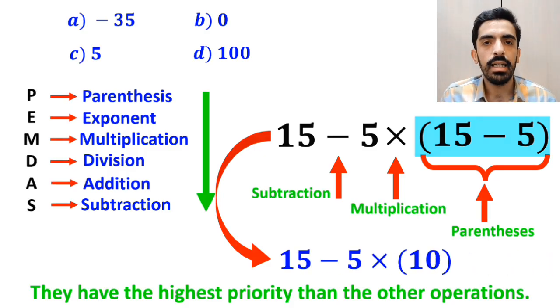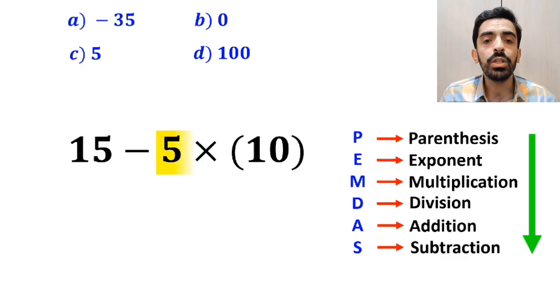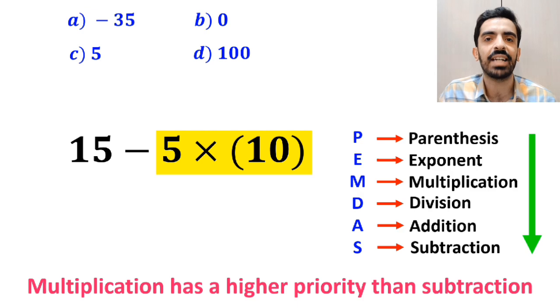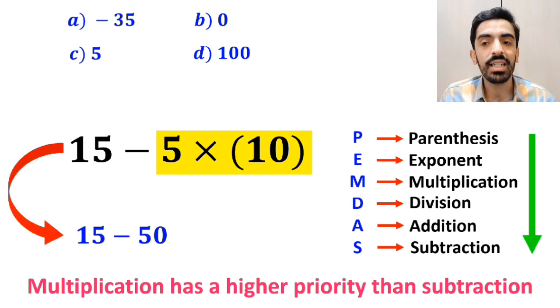In the next step we move on to the multiplication between 5 and 10 because multiplication has a higher priority than subtraction. So we'll write this expression as 15 minus 50 which finally gives us the answer negative 35.